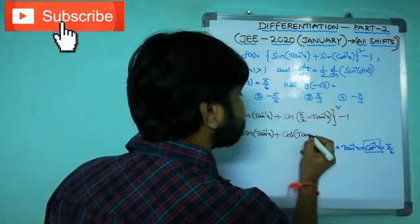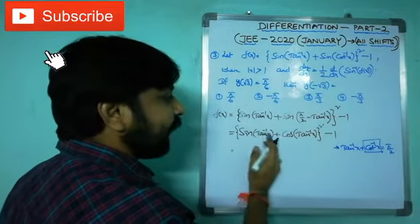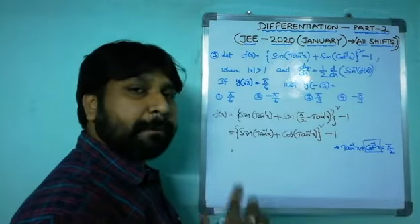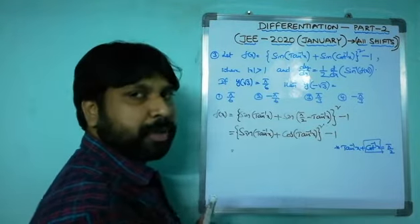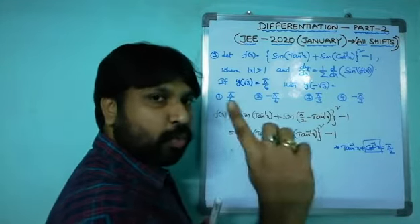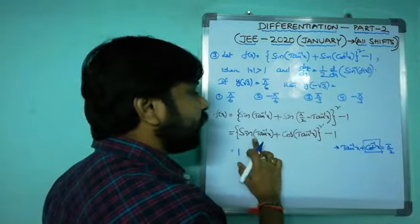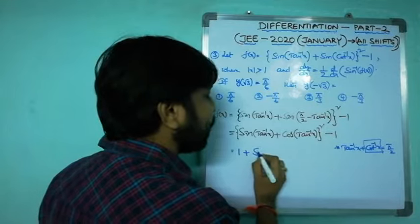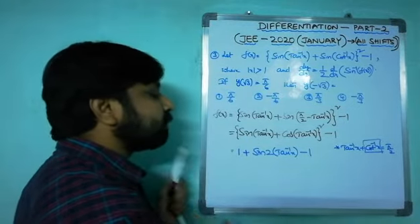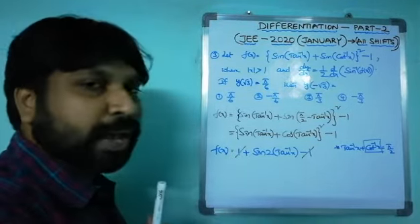Since sin(π/2 - θ) = cos θ, this becomes [sin(tan⁻¹x) + cos(tan⁻¹x)]² - 1. Expanding using (a+b)²: sin²θ + cos²θ + 2sinθcosθ - 1 = 1 + sin2θ - 1 = sin2θ. So f(x) = sin(2tan⁻¹x).